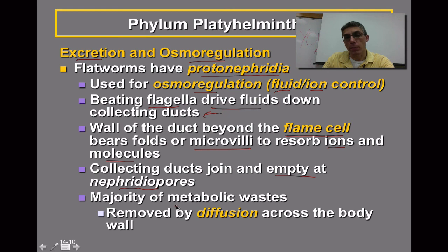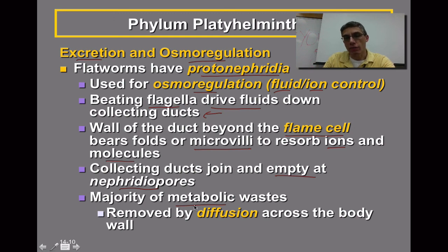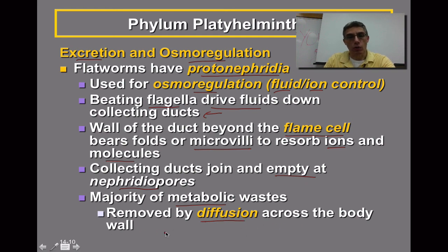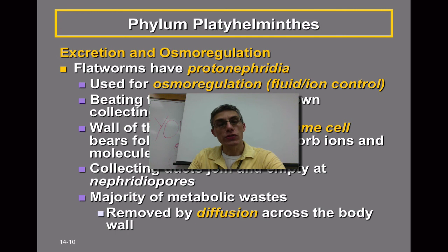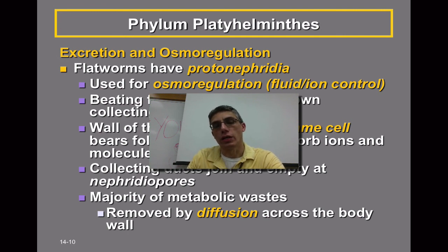When talking about metabolic waste — waste produced after the animal has fed, as opposed to fluid or ion regulation — the majority of metabolic waste is released simply by the process of diffusion across the body wall. This finishes up the first of three screencasts for chapter 14. Please make sure that you have completed your study guide before you come to class.